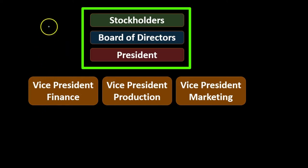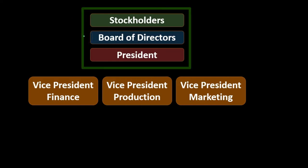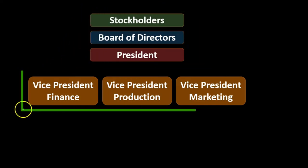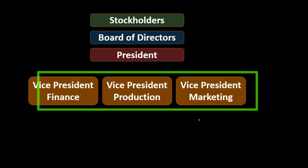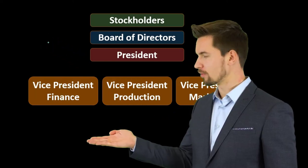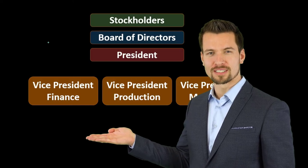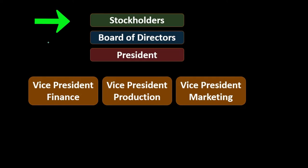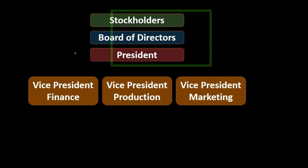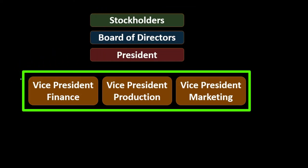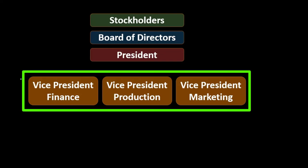Looking at the hierarchy: stockholders are at the top, then the board of directors, then the president and vice presidents. The corporate structure will differ based on the industry and whether it's centralized or decentralized. The corporate structure is typically very structured — almost like a military-type structure — with stockholders as the ultimate owners who hire the board of directors, which in turn oversees top management such as the president, and then employees below them.